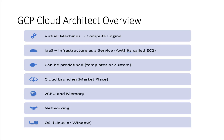When it comes to virtual machines, Compute Engine is your infrastructure as a service. These templates that you can deploy can be predefined or customized. There's Cloud Launcher, which we'll talk about — it's a marketplace. What's interesting about Google compared to other providers is that you can adjust the number of vCPUs and memory in your predefined template. The demos will walk you through all this.